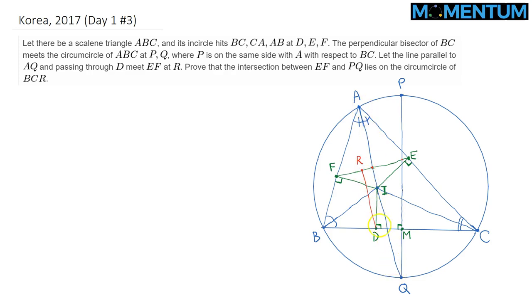Lastly, we connect EF which is the touch chord and we draw a parallel line from point D to PQ. As a result, we intersect that parallel red line with EF at point R as described in the problem. Notice that because EF is a touch chord, AI is perpendicular to EF, and because the red line DR is parallel to AQ, it's clear that DR is also perpendicular to EF.